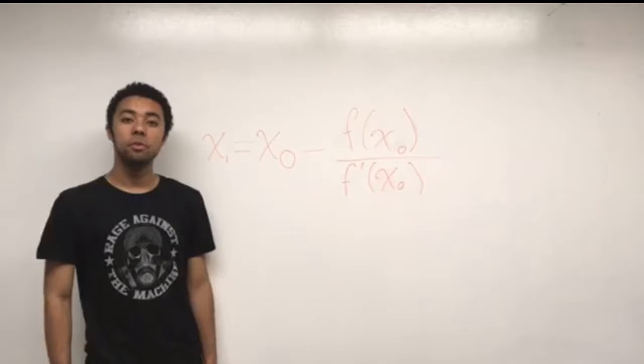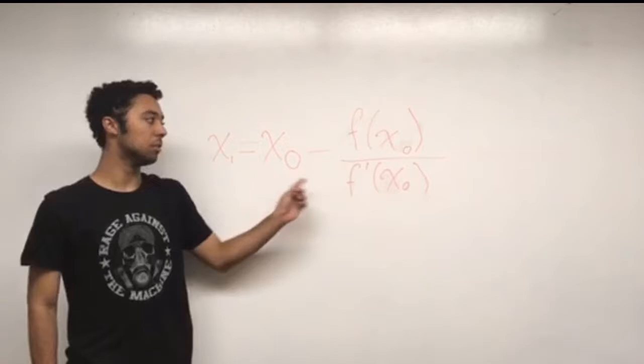These sequential approximations are repeated until f of x is near or equal to zero. The formula for Newton's method is x sub 1 equals x initial minus f of x initial divided by f prime of x initial.